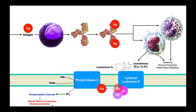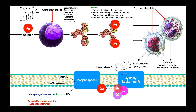We know in asthma that bronchoconstriction is a major problem, and you can see here how the leukotrienes — in particular C4 through E4 — play a role in that bronchoconstriction. Asthma is a lot more complicated than this, but this level of understanding is probably sufficient for how these drugs work. So now let's get into the drugs.